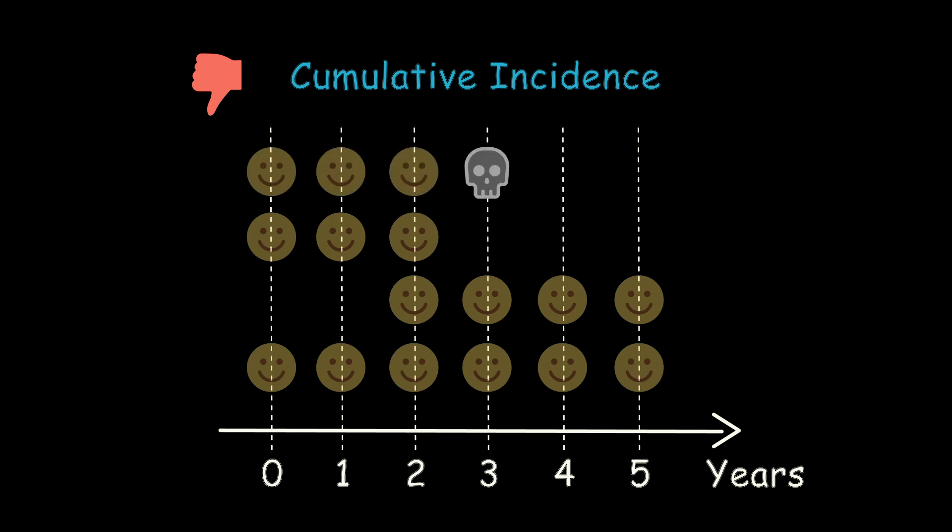To avoid bias in these cases, we can measure the occurrence of the disease using incidence rate instead of cumulative incidence, since the incidence rate takes into account different follow-up periods of study participants. And this will be the subject of our next video.